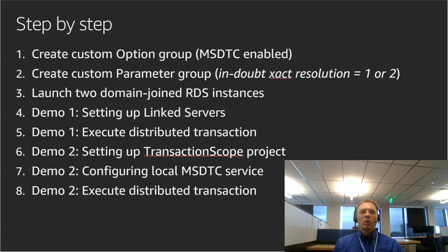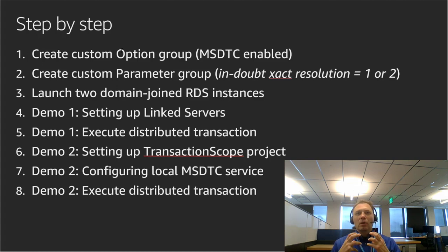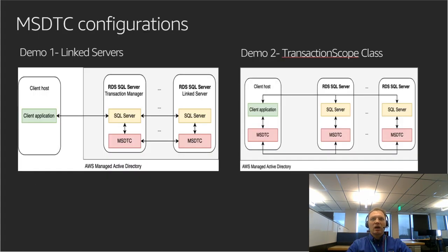In the first demo, we're going to set up a linked server between the two RDS instances and then execute our distributed transaction over that linked server. In the second demo, we're going to set up a C# project where we rely on the TransactionScope class, and we will control the transaction from the application itself.